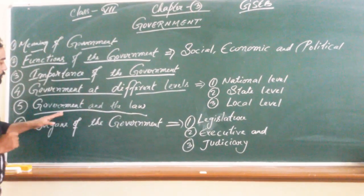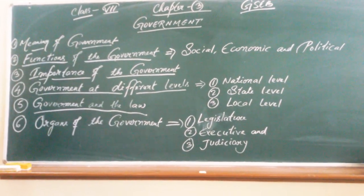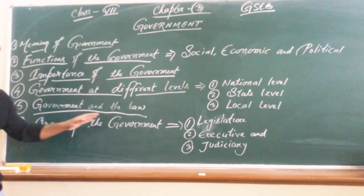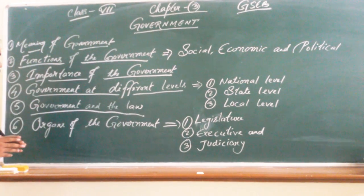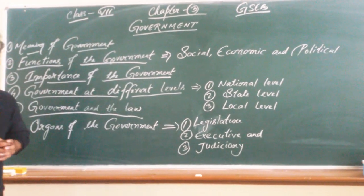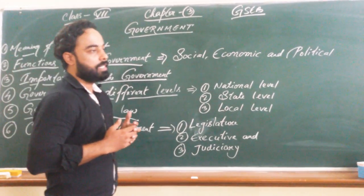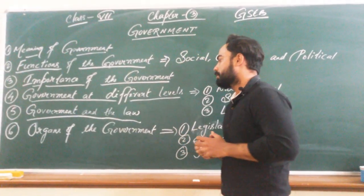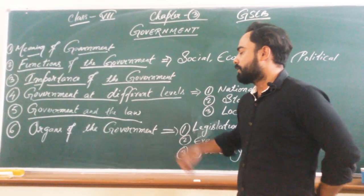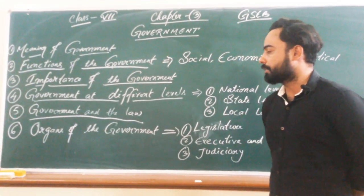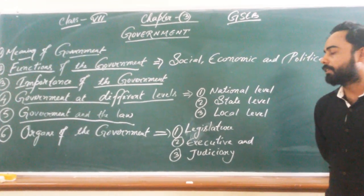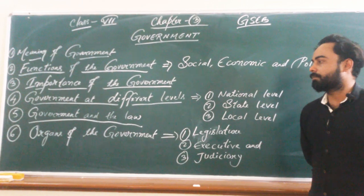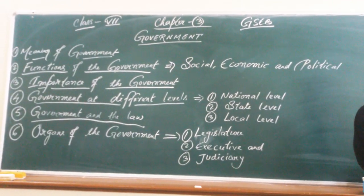Now, government and the law. As stated in our constitution, a country needs a government in order to make laws. The government makes certain laws which have to be abided by the people of the nation. Otherwise, they will be punishable by the judiciary. If they break the law, it is a punishable offense and they can be fined or jailed.